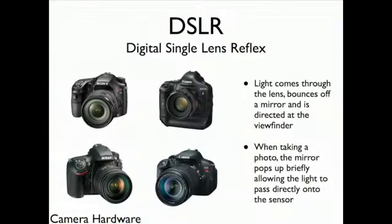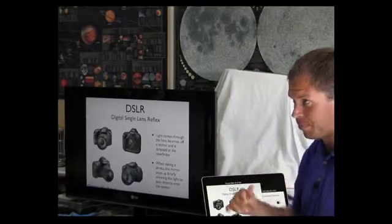Some of them are better than others. All right. So let's go on to hardware. So digital SLR refers to a digital single-lens reflex. So light comes through, it bounces off a mirror, and is directed at the viewfinder. When you take a shot, the mirror flops up, allowing the light to hit the sensor.